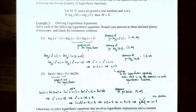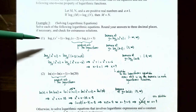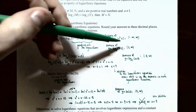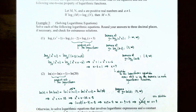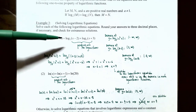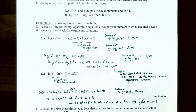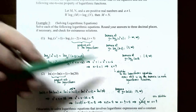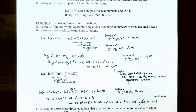Now check whether x = 7 is in the domain of each logarithmic expression. For log₃(x²+1), the argument is always positive so the domain is all real numbers. For log₃(x−2), the domain is (2, ∞). For log₃(x+3), the domain is (−3, ∞). Since x = 7 satisfies all three domains, it is the only solution.